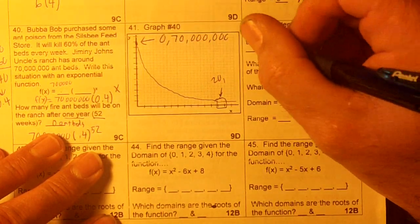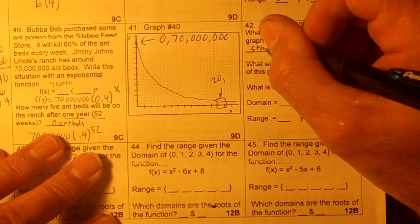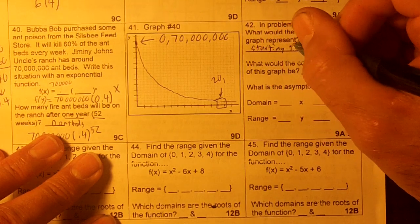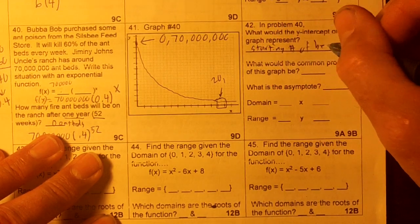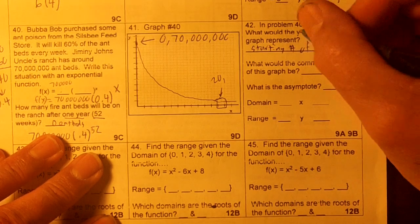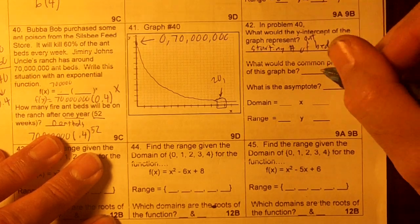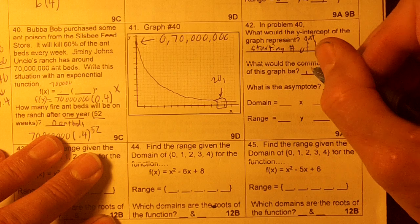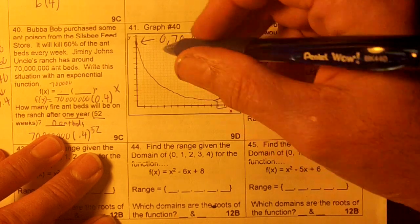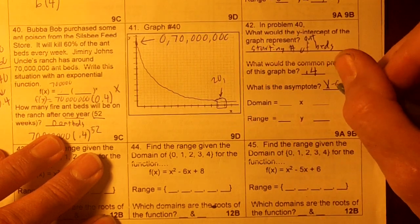So the y-intercept, 70 million, is the starting number of beds. Of ant-beds, that is. The common product is 0.4, and that's going to make the number of beds go down. The asymptote is still the x-axis.